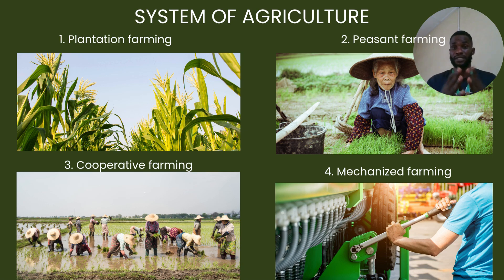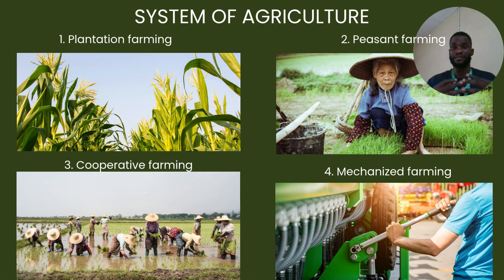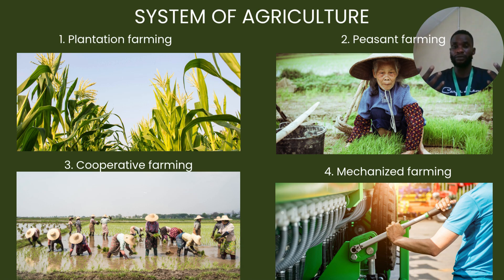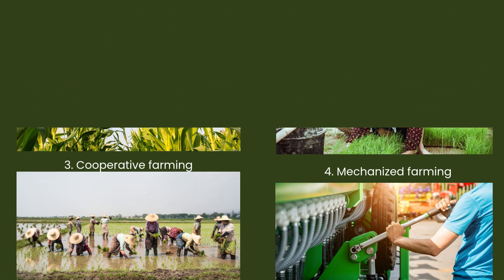We have cooperative farming, which is a farming system whereby different farmers come together with the mindset of creating a union for the purpose of farming. We also have mechanized farming, which involves cultivation of a large area of land and large-scale production.